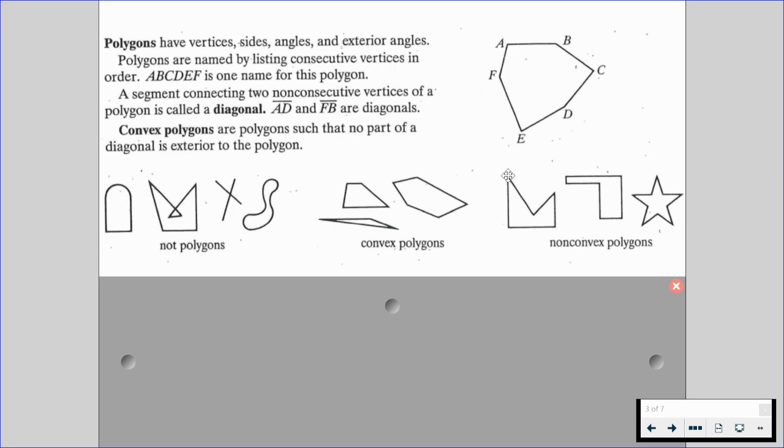So for example, if we look at this first figure, I could connect these two vertices, and that diagonal is in the exterior. So it's not going to be convex. It's still a polygon because it has rigid sides and vertices, but it's not a convex polygon.